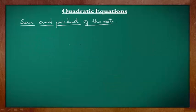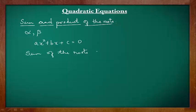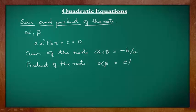Next, let's learn how to determine the sum and product of the roots. Let alpha and beta denote the roots of the quadratic equation. The sum of the roots, alpha + beta, is equal to -b/a. Similarly, the product of the roots, alpha × beta, is equal to c/a.